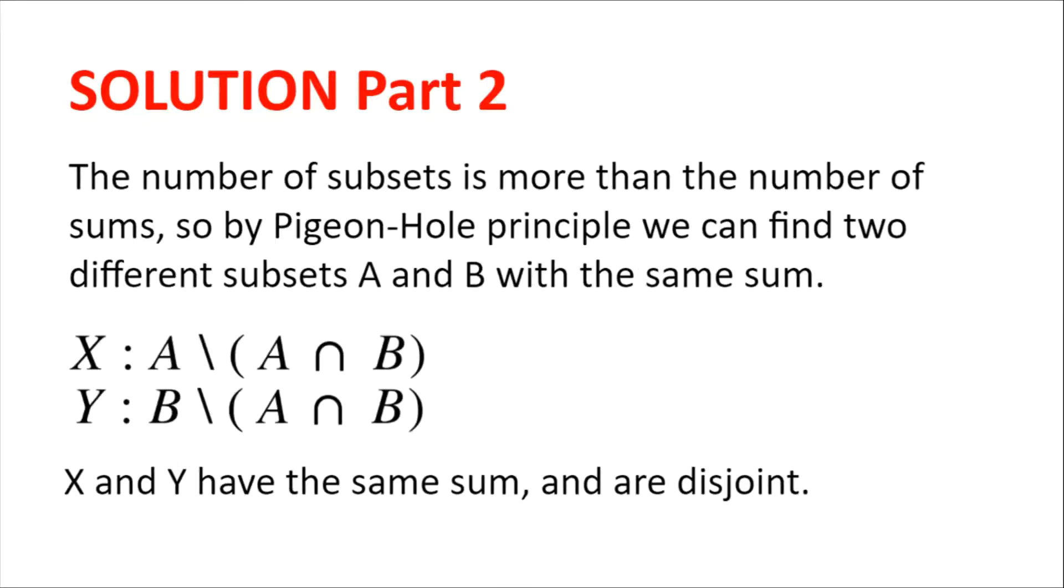So, the number of subsets is more than the number of sums, because the number of possible subsets is 1022, and the number of sums is less than 900. So, by pigeonhole principle, we can find two different subsets, A and B, with the same sum.